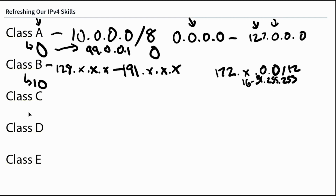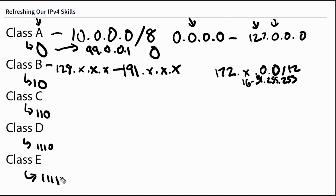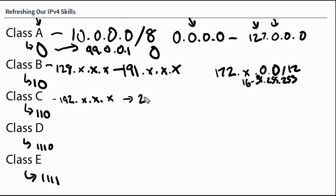Moving on to Class C, you can see the trend emerge even further. The higher-order bits are 110. And following the pattern — Class D is 1110, Class E is 1111. Class C is the one we all grew up knowing about: that's the 192 section, ranging from 192.x.x.x through 223.x.x.x. We think about the Class C private address of 192.168, the one that comes out of the box when we buy a device from Best Buy.